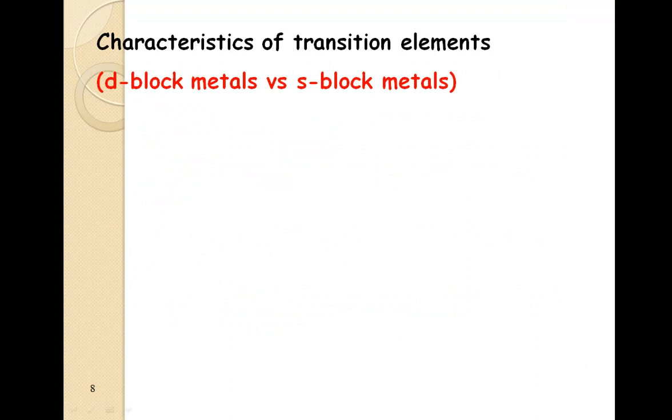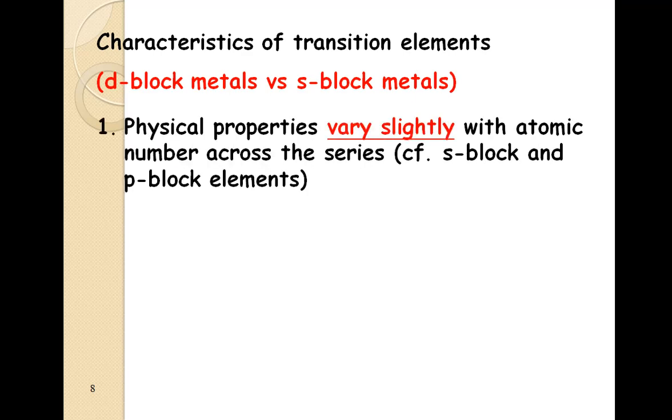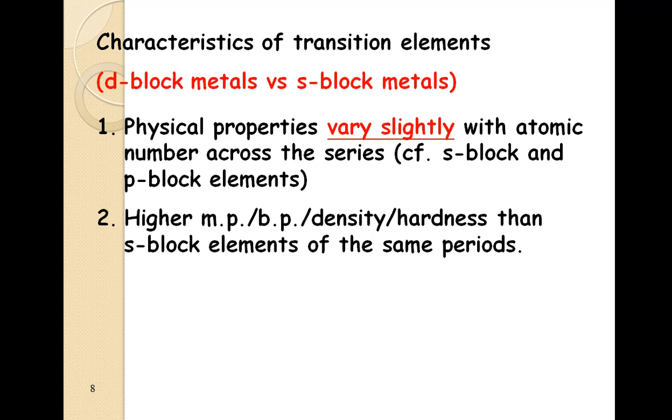Now some characteristics of transition elements. Here we are going to compare the d block elements with s block metals. Physical properties vary slightly with atomic number across the series in case of d block metals, whereas in case of s block and p block, these properties vary drastically, abruptly. Second characteristic is high melting point, boiling point, density, and hardness as compared to s block elements of the same periods.